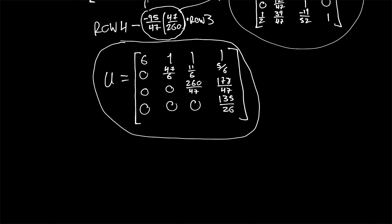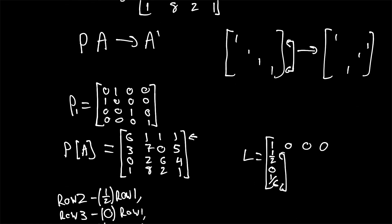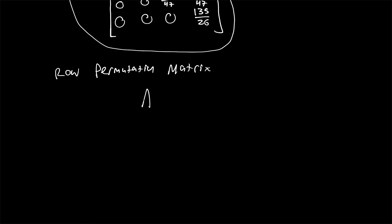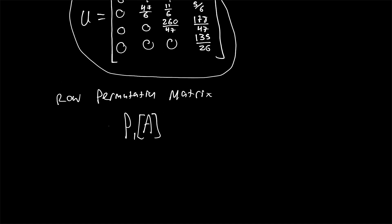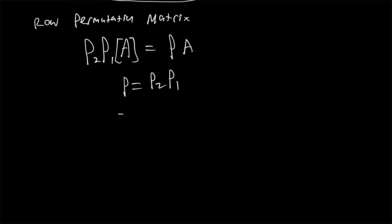Finally, we need to identify the effective row permutation matrix — the matrix pre-multiplied by our original A to get the format we solved. Our first row permutation P1 swapped the first two rows, so we had P1 times matrix A. Later we applied a second row swap giving permutation matrix P2, which was again pre-multiplied. Therefore our effective permutation matrix is P equals P2 times P1, which is the multiplication of these two permutation matrices.